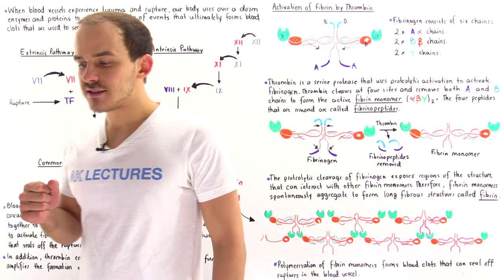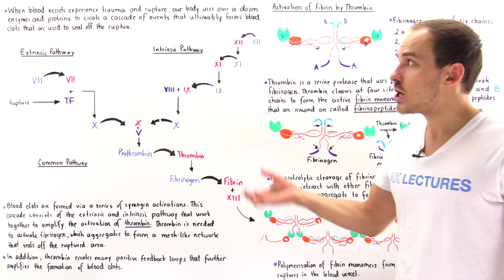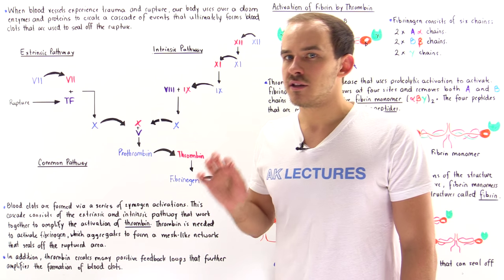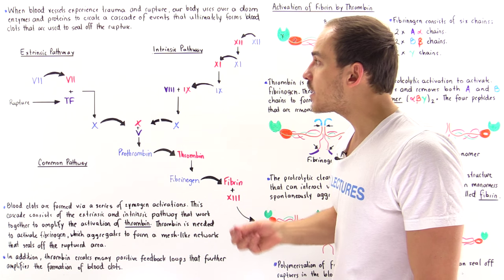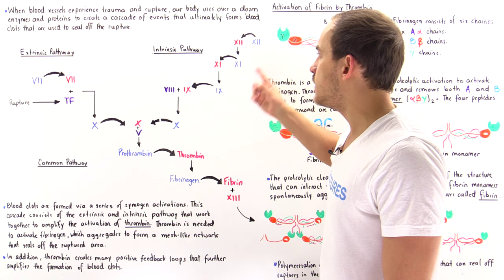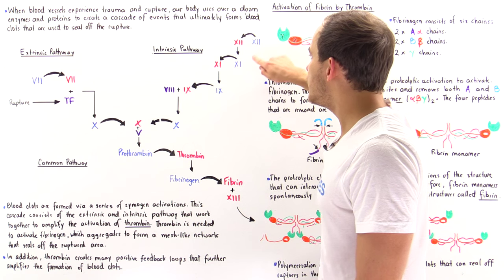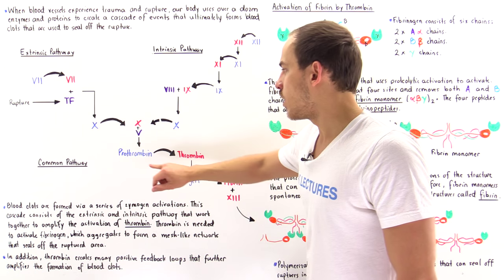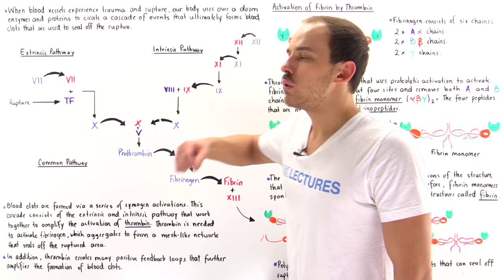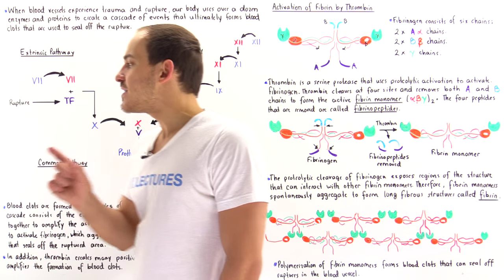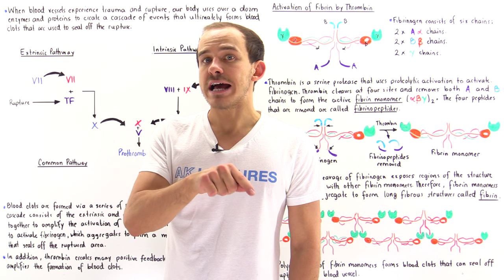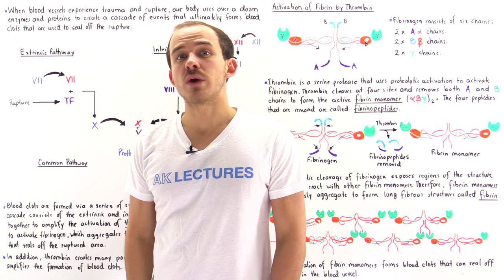Not only digestive enzymes, but also the enzymes of the blood clot cascade are activated via proteolytic cleavage. Proteolytic activation is a very dominant mechanism here, as the majority of all these zymogens are activated via proteolytic cleavage — including prothrombin being activated into thrombin, which activates fibrinogen into fibrin, ultimately forming those mesh-like networks of fibrin monomers that seal off the blood vessel and prevent blood plasma from leaking into the extracellular environment.